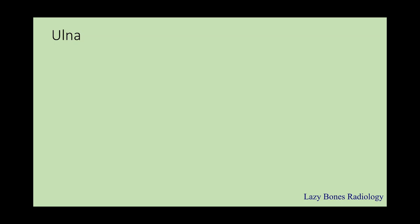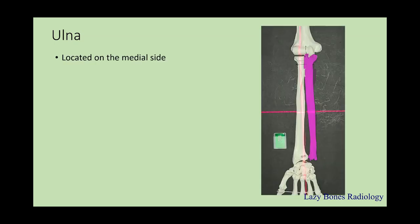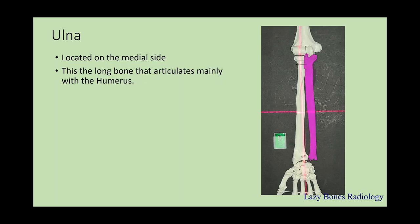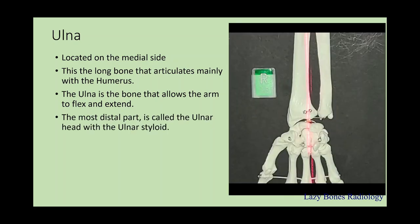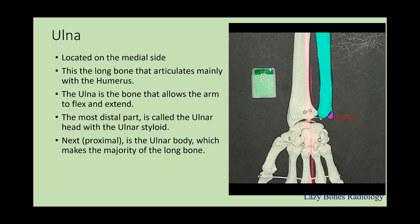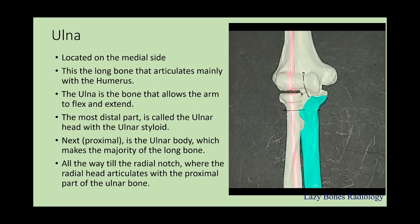Now let's talk about the ulna. This is the long bone located on the medial side of the forearm that articulates mainly with the humerus, and is the bone that allows the arm to flex and extend. The most distal part of the ulna is known as the ulnar head, which contains the ulnar styloid, as you can see here on the right-hand side. Moving proximal is the ulnar body, which makes the majority of the long bone, all the way up to the radial notch. This is where the radial head articulates with the proximal part of the ulnar bone.